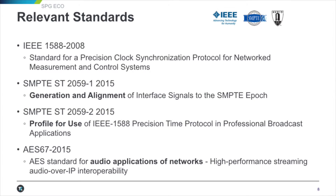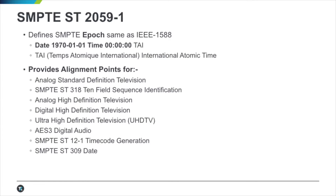Relevant standards: we have IEEE 1588, the high-level overview of Precision Time Protocol. The video implementation is SMPTE 2059-1 and 2059-2. Dash-1 is about generation and alignment; Dash-2 is about the protocol specific to different flavors of video timing. For audio implementations, AES-67 is used. SMPTE 2059-1 is where you get to the epoch — the birth moment in time where PTP starts, January 1, 1970, at zero hundred hours. Dash-1 provides alignment points for all flavors of audio and video timing needed in this industry.